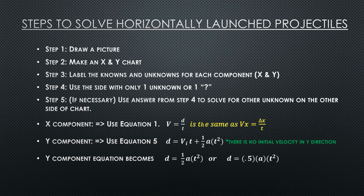For Y component, you will use equation 5. Remember that there is no initial velocity in the Y direction. Therefore, VIT does not exist. So the Y component equation becomes D is equal to 0.5AT squared.